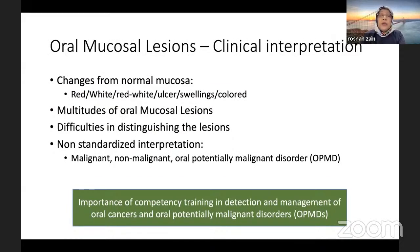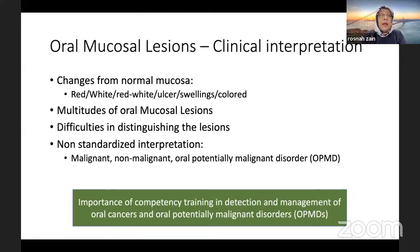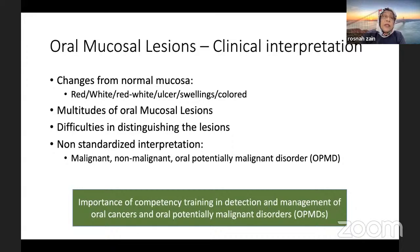I'd like to introduce oral mucosal lesions from a clinical interpretation perspective — without biopsy or tests, just looking at the mucosa. Oral mucosal lesions are basically changes from normal mucosa: red mucosa, white mucosa, red and white areas, ulceration, swellings, or other coloured changes like black pigmentation. There are multitudes of oral mucosal lesions, yet their prevalence is very low, making them difficult to distinguish. Whatever has been learned needs to be refreshed because retention is very low if you don't see many of these cases.